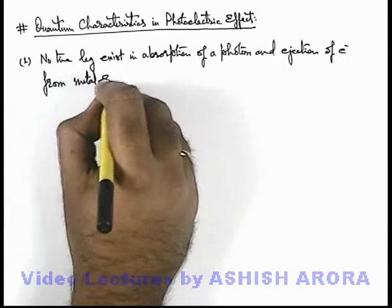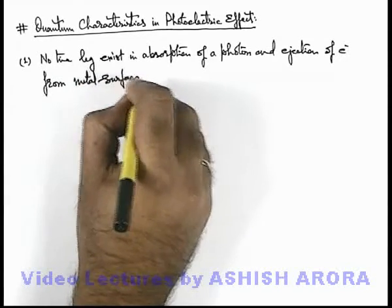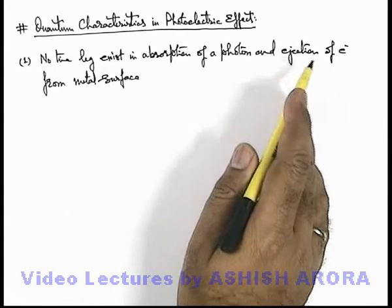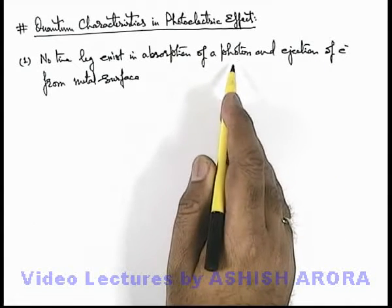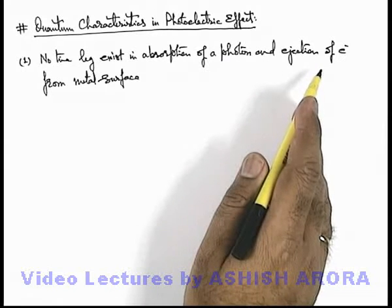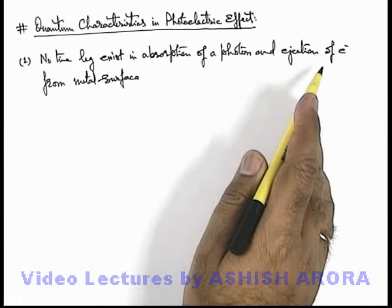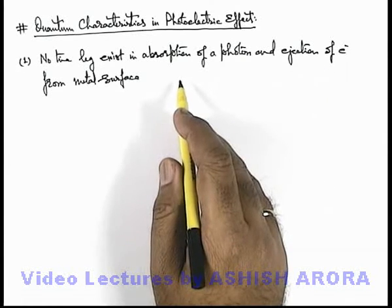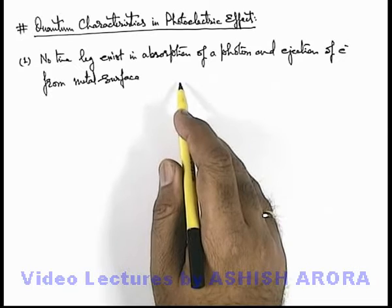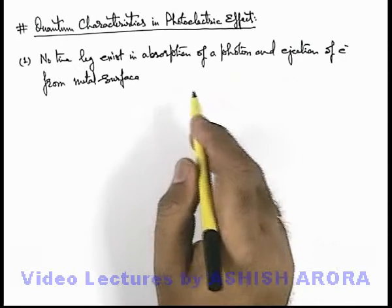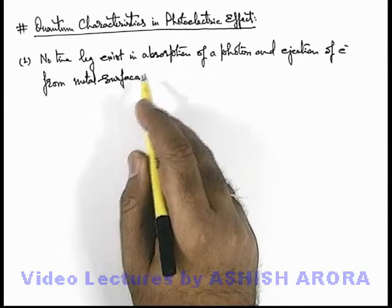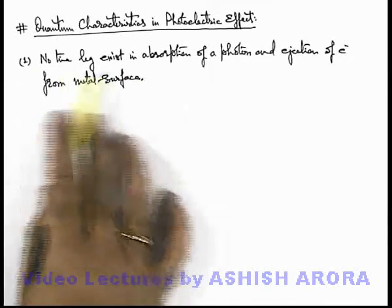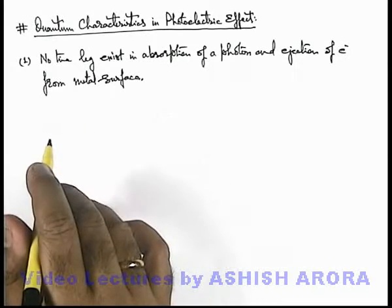When we talk about the energy of an electron, as soon as it absorbs a photon, its overall energy increases by the amount of energy of the photon it has absorbed. As soon as its energy increases, we consider that the electron is ejected. In the process of coming out of the lattice surface, it may collide with other electrons and lose some energy. So as a quantum phenomenon, no time lag exists in absorption of a photon and ejection of an electron.